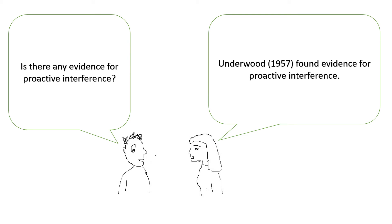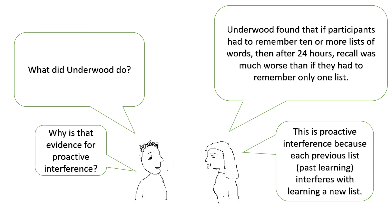There is also evidence for proactive interference. Underwood 1957 analysed a number of studies that used word lists in order to investigate proactive interference. Underwood found that if participants had to remember 10 or more lists of words, then after 24 hours recall was much worse than if they had to remember only one list. This shows proactive interference because each previous list interfered with the learning of a new list — the past learning interfered with trying to remember newer information.